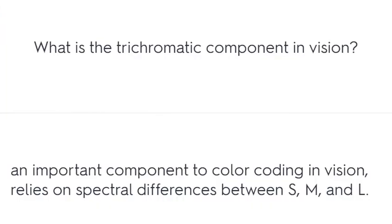What is the trichromatic component in vision? An important component to color coding in vision that relies on spectral differences between S, M, and L cones.